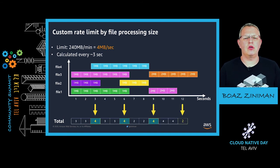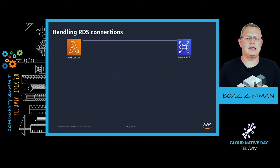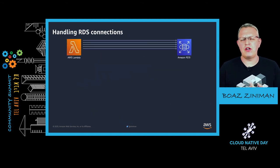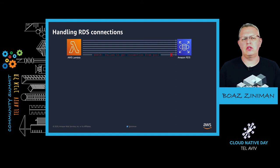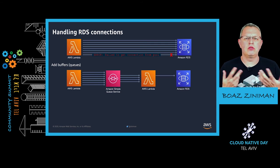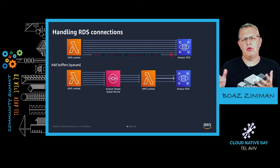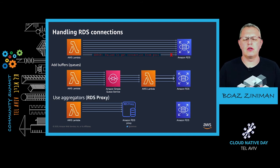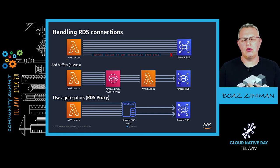Here's another example: talking with an RDS database. If your function is talking with RDS directly, you might run into connection issues and run out of connections. Using buffers will ensure there's another function dealing with a queue of tasks, making sure you're not flooding your database. You can also use aggregators — we recently launched RDS Proxy, which helps aggregate your connections and reduce the load on your database.